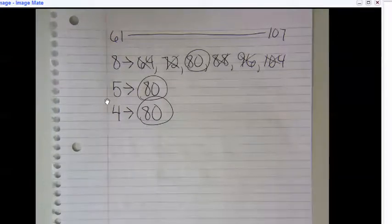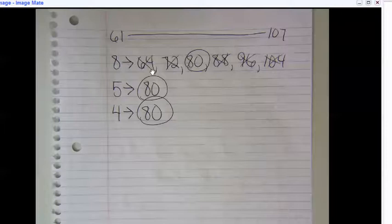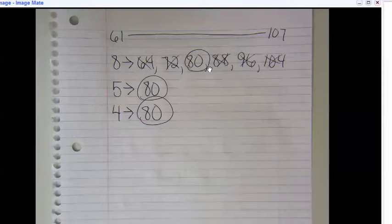And then multiples of five knocked out quite a few of them. All of them but one, because multiples of five are going to have a five or zero in the ones column. So all of these that didn't, I had to cross off. The only one that did was 80. And 80 is also a multiple of four. So 80 is the only multiple of all three of those numbers that falls between 61 and 107.